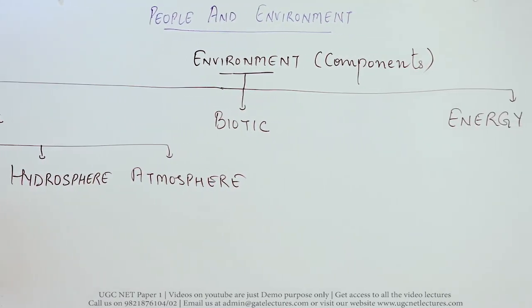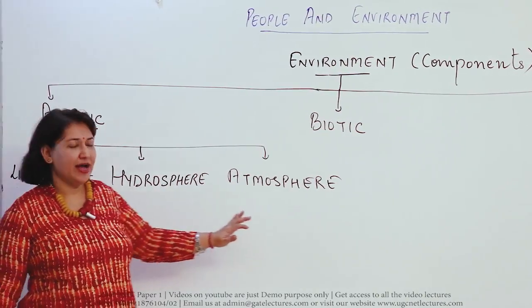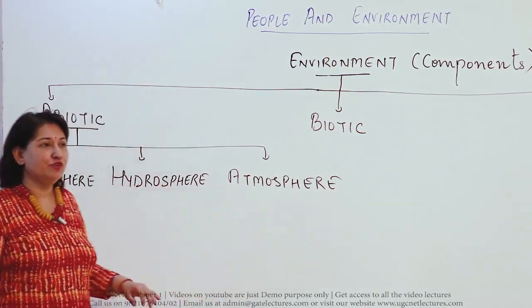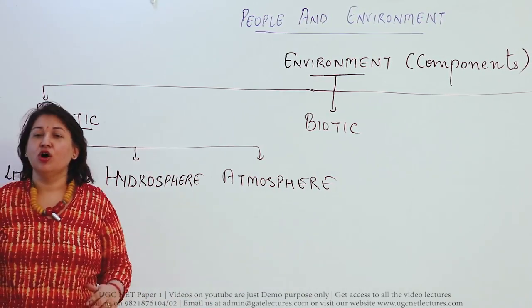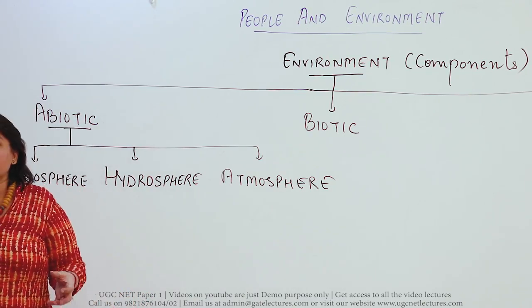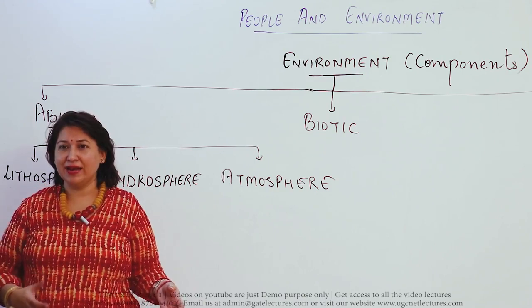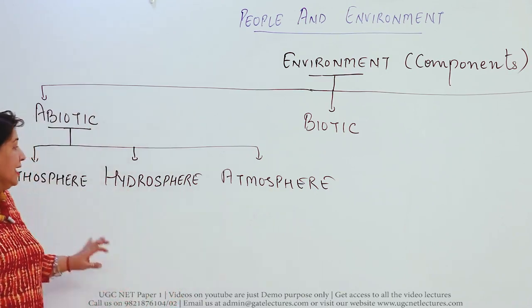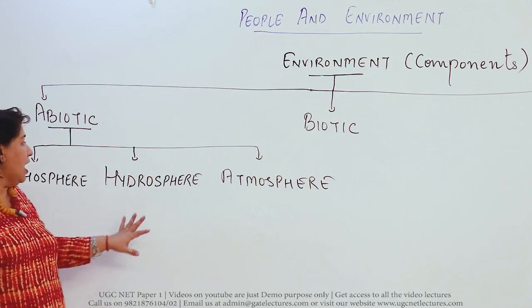We can divide the abiotic components into three parts: lithosphere, hydrosphere, and atmosphere. First is lithosphere. Lithosphere consists of the crust or the layer of the earth, basically the place where we live. Plants, animals, and organisms live here, and lithosphere is a very rich source of minerals.